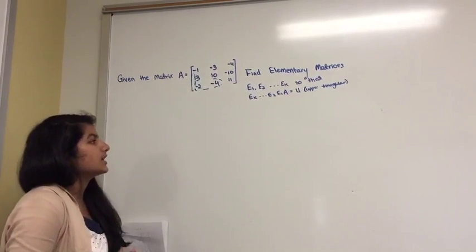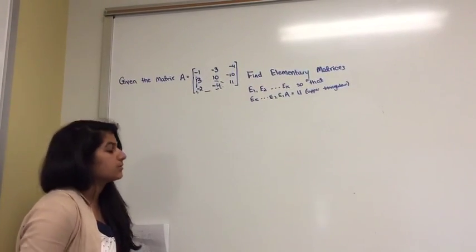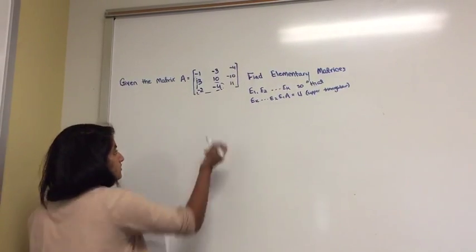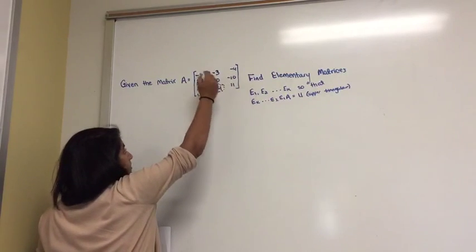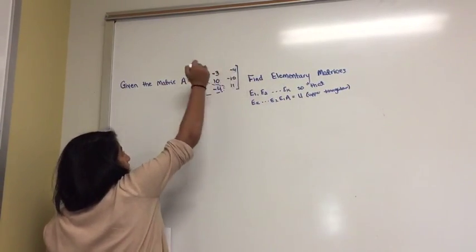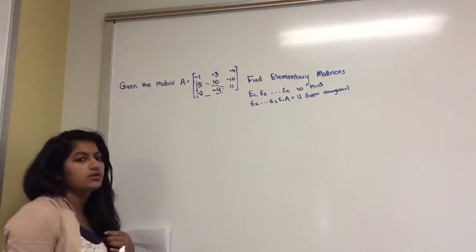And what that's saying is it wants you to find an upper triangular matrix. And in a sense, what that means is these three numbers should go to zero, so it kind of makes like an upper triangle of numbers.